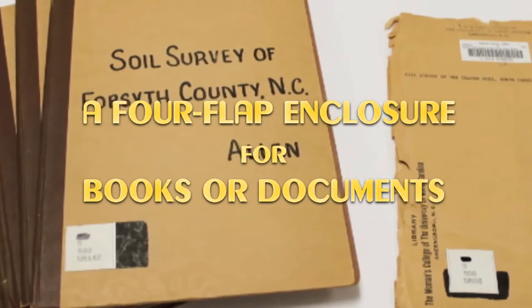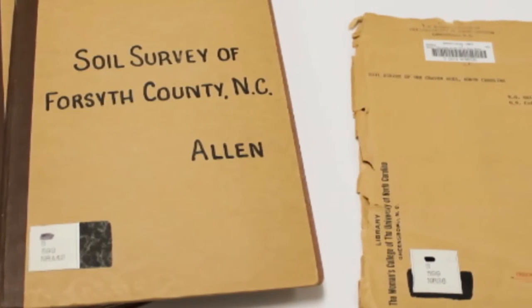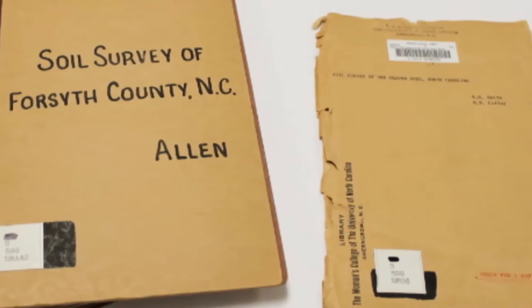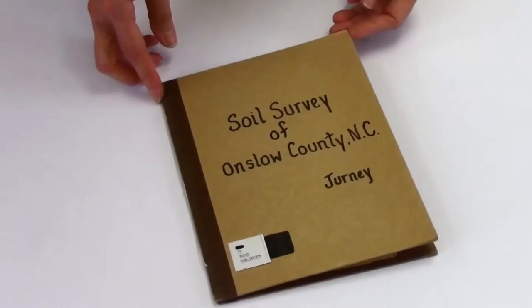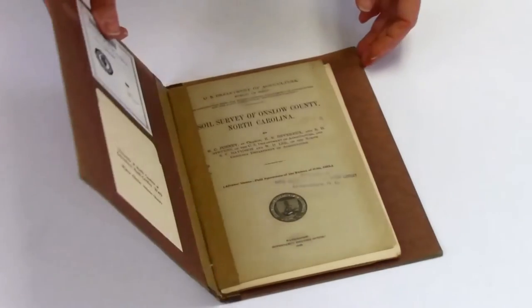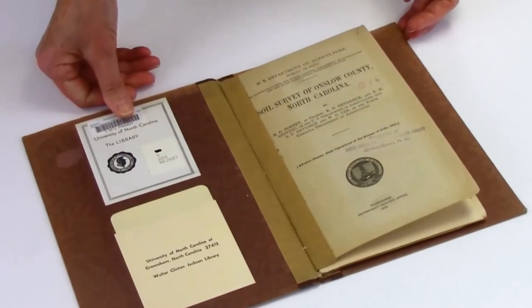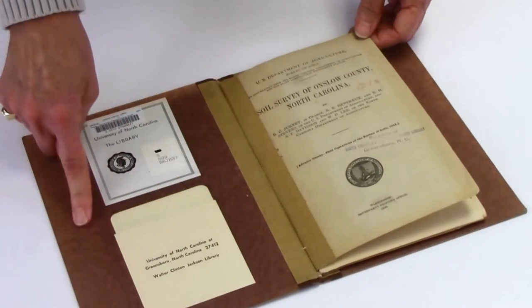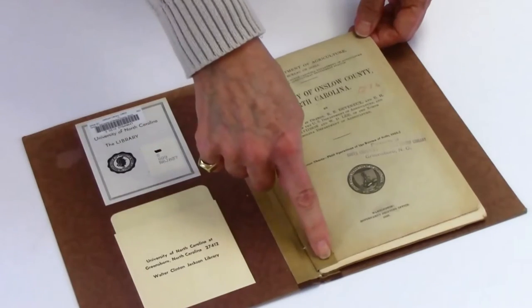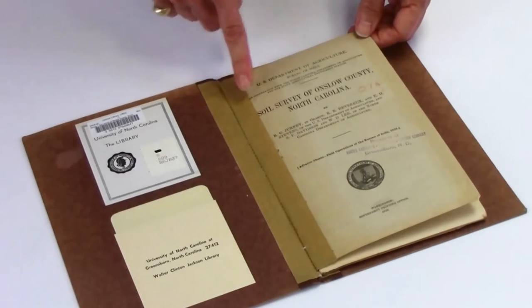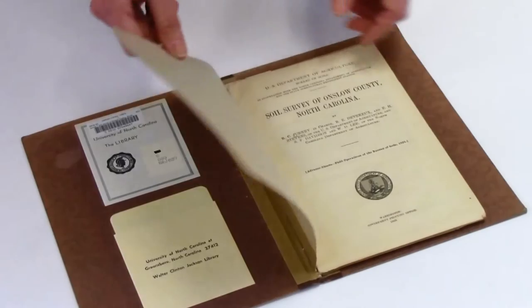Located in our library's archives is a set of soil survey documents for every county in our state, which includes an informative booklet and an attached map. These large maps were difficult to open due to the manner in which they were attached to the pamphlet.